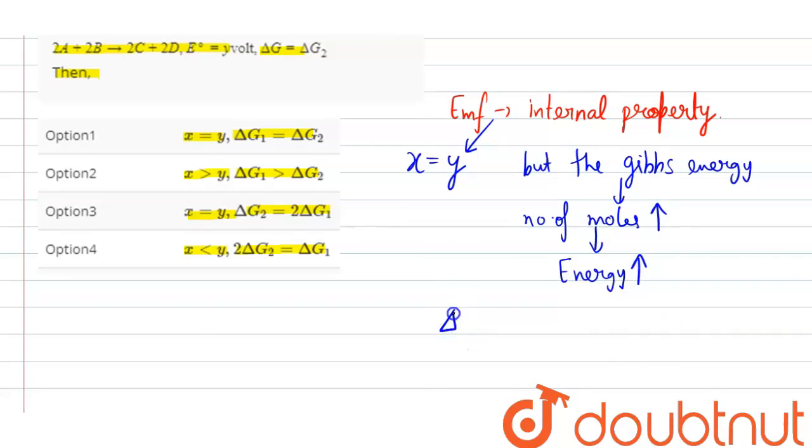That means that in the second reaction, delta G2 will be greater than the first reaction, delta G1. That is, delta G2 is equal to twice into delta G1.